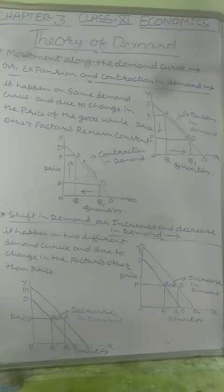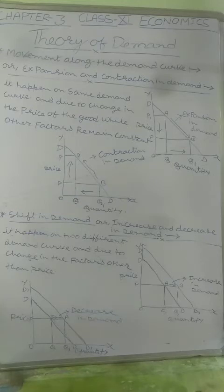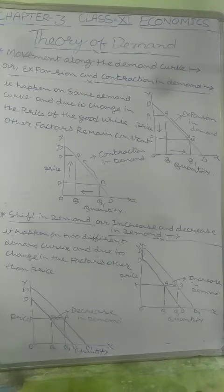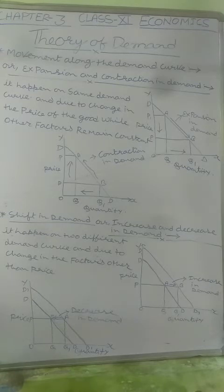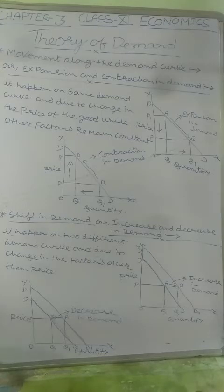If there is only a change in the price of the goods, then the consumer's demand will get changed. Whenever the price is higher, consumers demand less quantity, and an upward movement on the demand curve is shown — that is known as contraction in demand. Whenever there is a decrease in price, the consumer moves downward on the demand curve, and that is known as expansion in demand. Expansion and contraction are two different cases.